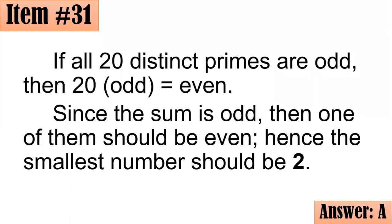So what happens if you have 19 odd? 19 times an odd number, then 19 times odd is odd. And even, which is 2, 2 plus odd, even plus odd will give you an odd number. Hence, 2 should be the smallest number in this set.